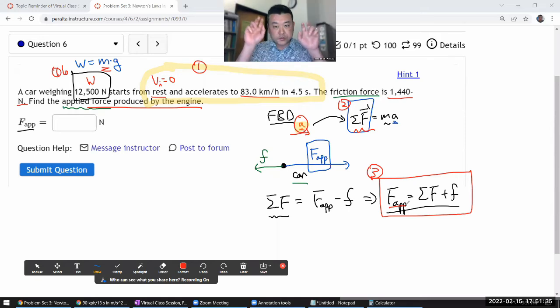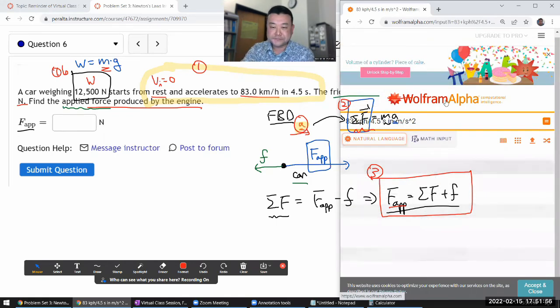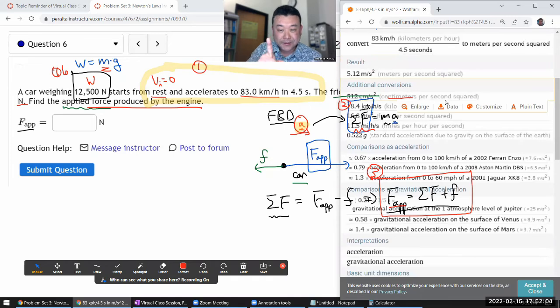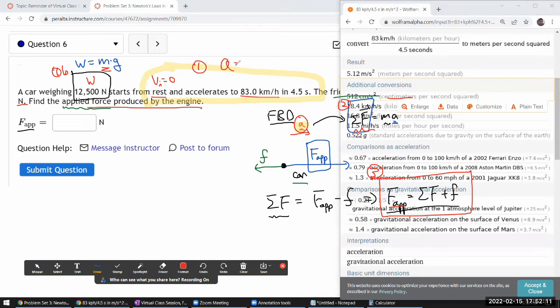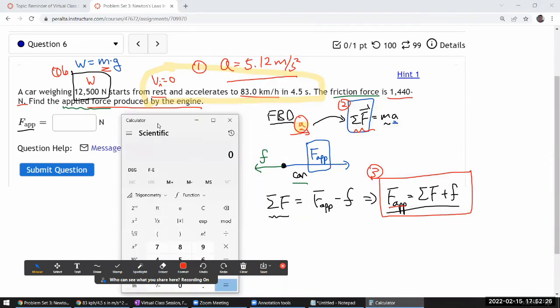So for step number one, I think I'm going to cheat and use WolframAlpha just so that I don't have to do unit conversion. Again, I know how to do it by hand. In fact, I think there's a video of me doing it by hand. So I'm going to leave it there for the acceleration. It's 83 kilometers per hour divided by 4.5 seconds in meters per second squared. I just don't want to spend the time doing unit conversion when I can do something else. So 5.12. So that's going to be my acceleration value that I'll use from here on. Acceleration is 5.12 meters per second squared. And I think I can do the rest of the calculation on my scientific calculator.